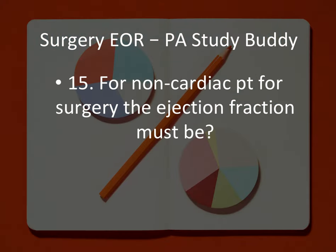For non-cardiac patients undergoing surgery, the ejection fraction must be greater than 35%. They're going to give you echo results with different ejection fractions, and to undergo anesthesia for non-cardiac surgery, the ejection fraction must be greater than 35%. Anything less than 35% and anesthesia may hold the surgery.